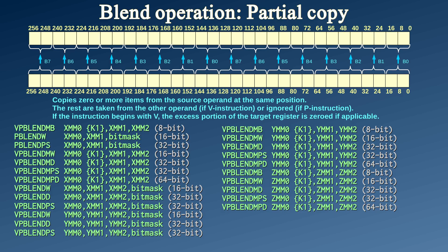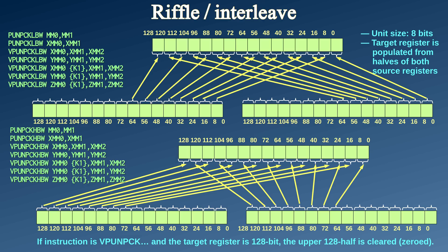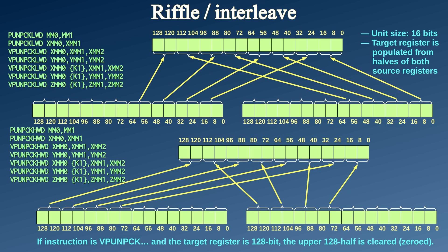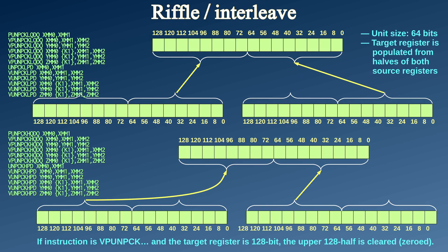If there is one SIMD instruction that warrants the 'good grief' status, it is the unpack instruction, which in my opinion should have been called a riffle or an interleave. It essentially takes two source registers and interleaves the lower halves byte-wise into the target register. There are two variants: one which takes the lower halves, and the other which takes the high halves. Of course, the same operation also exists word-wise, double-word-wise, and quad-word-wise. In this usage, there are again two instructions that do exactly the same thing: PUNPCKLQDQ and UNPCKLPD — this probably has something to do with hinting.